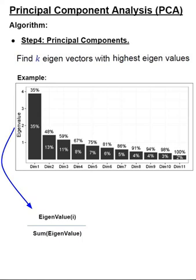Now, what this chart indicates is the first eigenvalue explains 35% of variance in the data. The second explains 13% of variance in the data. The third eigenvalue explains 11% of variance in the data, etc., etc.